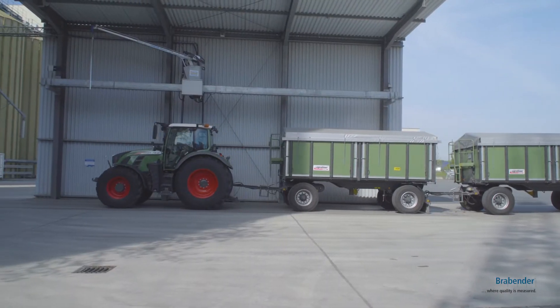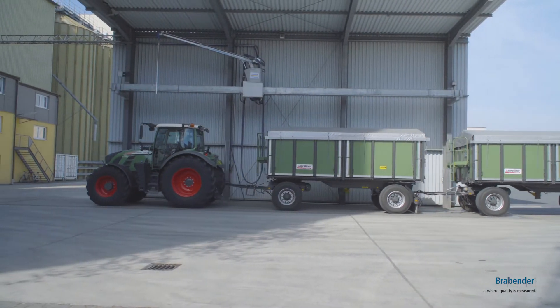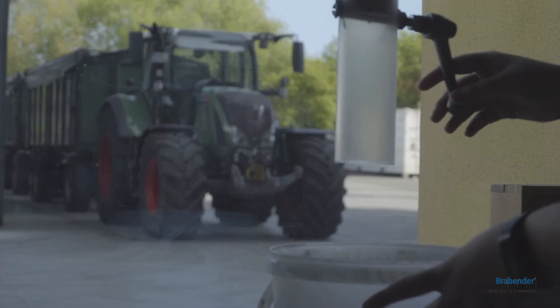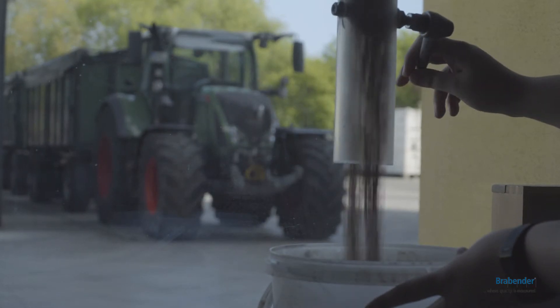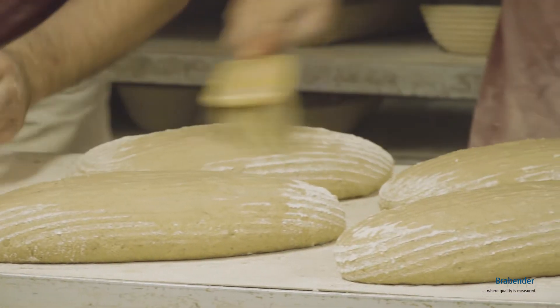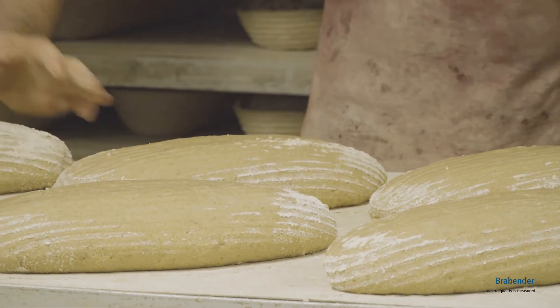The determination of the raw materials quality is a standard task in the milling industry. A definitive criterion for the evaluation of baking properties is the content of gluten in flour.